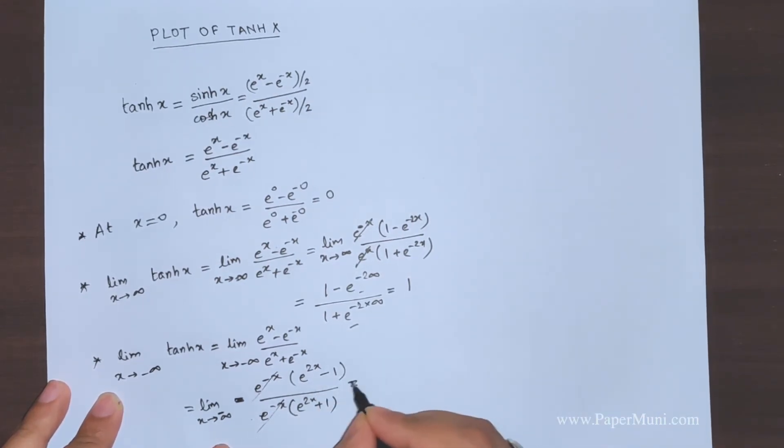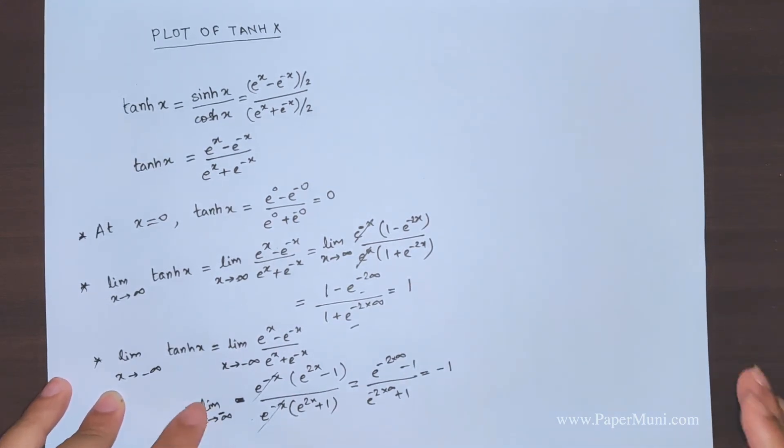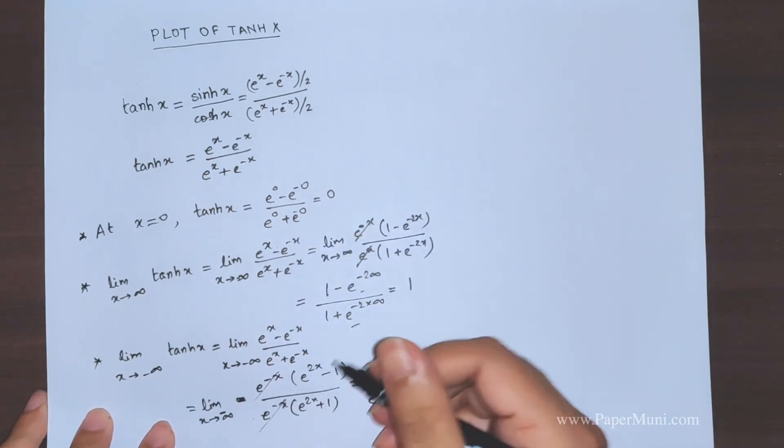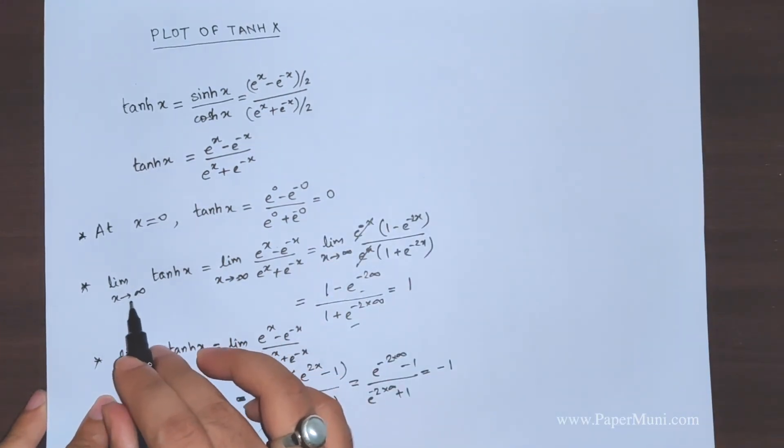When we put minus infinity, e^(2x) goes to 0. Both terms with e^(2x) go to zero. We're left with (0 - 1)/(0 + 1) = -1/1 = -1. So the limit is -1.